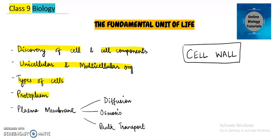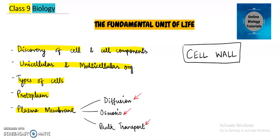We also talked about what are the different types of cells present in the human body, what is protoplasm, what is plasma membrane, its structure and functions. In the functions, there were few terms discussed in a separate video — diffusion, osmosis, and bulk transport. Remember the types of solutions discussed under osmosis — that is also very important to understand.